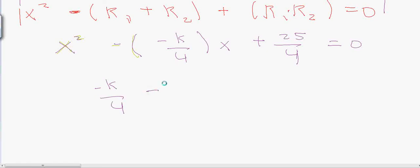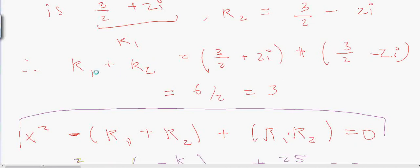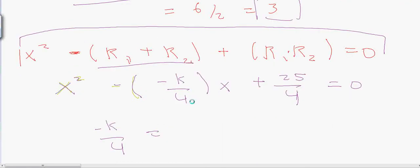So from that we know that negative k over 4 must be equal to 3, because we just solved that the sum of the two roots must be 3. Through this theorem, the sum of the two roots makes up the coefficient. So negative k must equal 12 and k must equal negative 12.